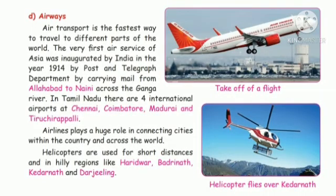Second: match the following. 1. International airport in Tamil Nadu — Answer: Tiruchirappalli. 2. Important public transport — Answer: bus. 3. Train from Kanyakumari to Jammu — Answer: Himasagar Express. 4. Major sea port of Tamil Nadu — Answer: Chennai. 5. Chennai Metro Rail started in the year — Answer: 2015.